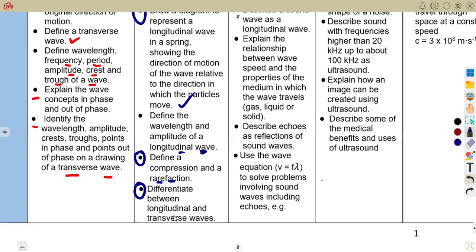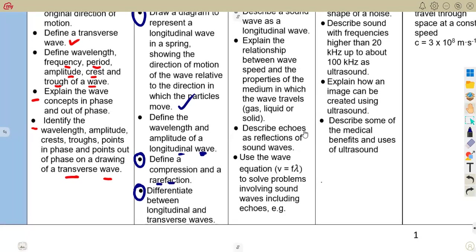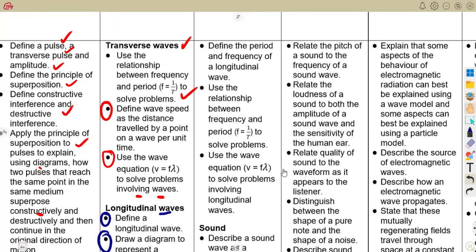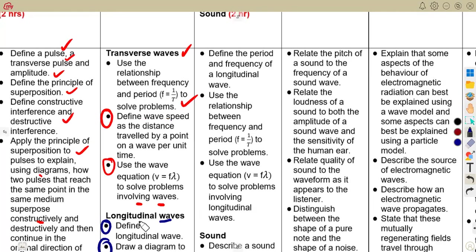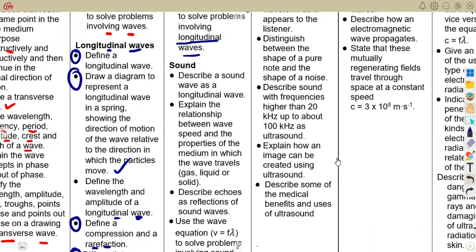You should also differentiate between longitudinal and transverse waves. Still on longitudinal waves, define the period and frequency of a longitudinal wave, and use the relationship between frequency and period — the same relationship as before. The wave speed formula is also the same, but now you are applying it to a longitudinal wave.